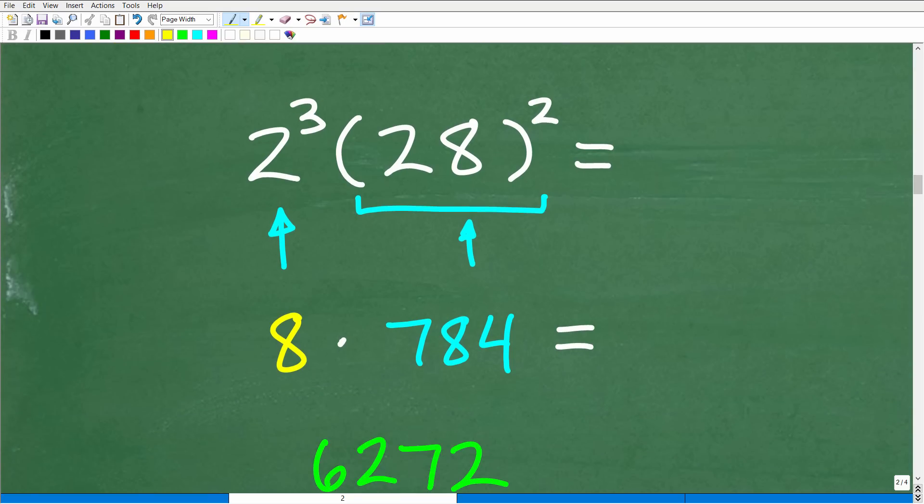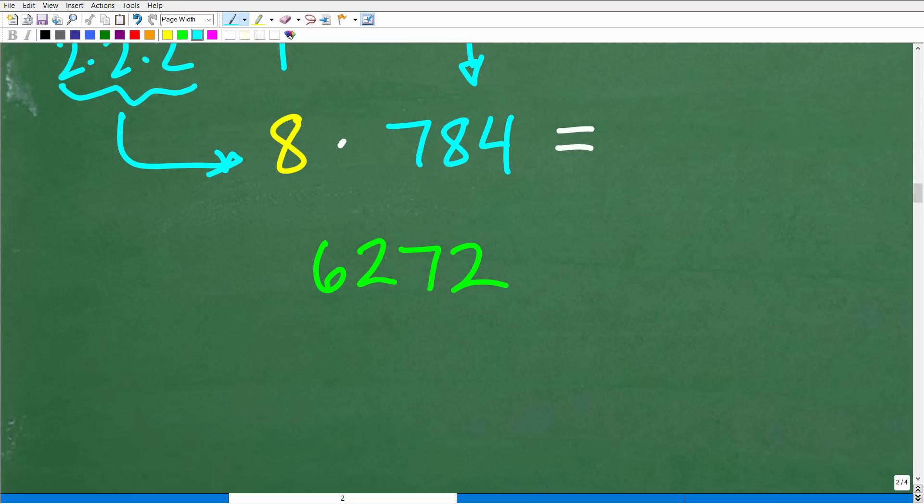Okay. So 2 cubed times, this is multiplication, right? We can't do multiplication yet until we handle the powers. Okay. So we got to figure out what 2 cubed is and 28 squared. 2 cubed is what? Well, that's 2 times itself 3 times. Okay. So that is what 2 cubed is. So 2 times 2 times 2 is, of course, 8. And then 28 squared is 28 times 28. And when you do that basic multiplication, you end up with 784. So now we're down to this last operation, which is multiplication. So 8 times 784, which of course would be 6272.